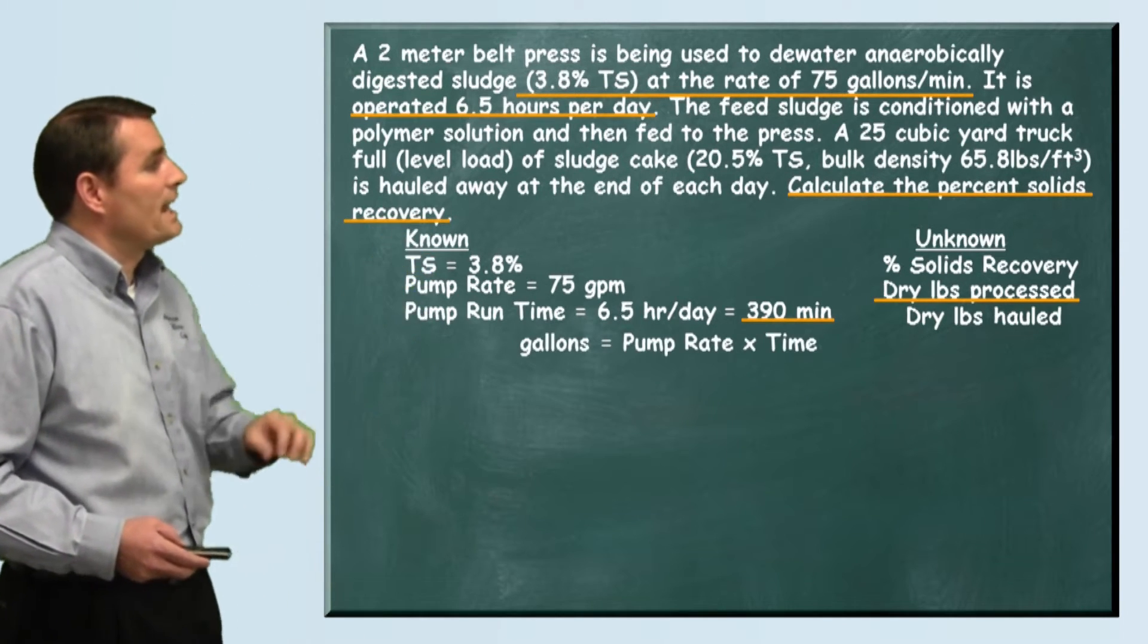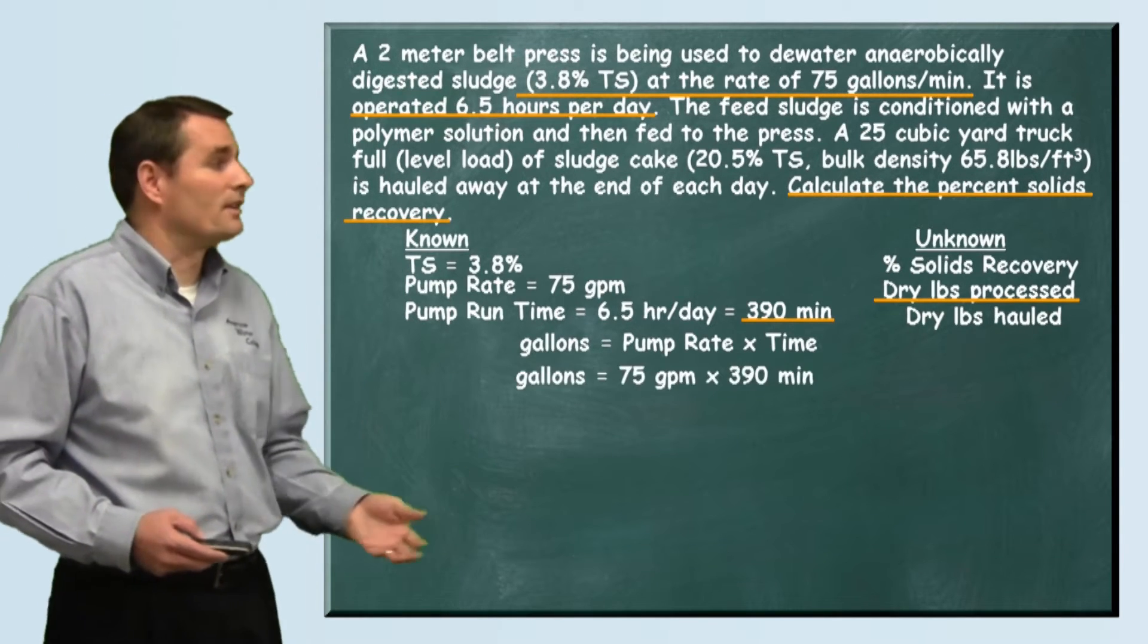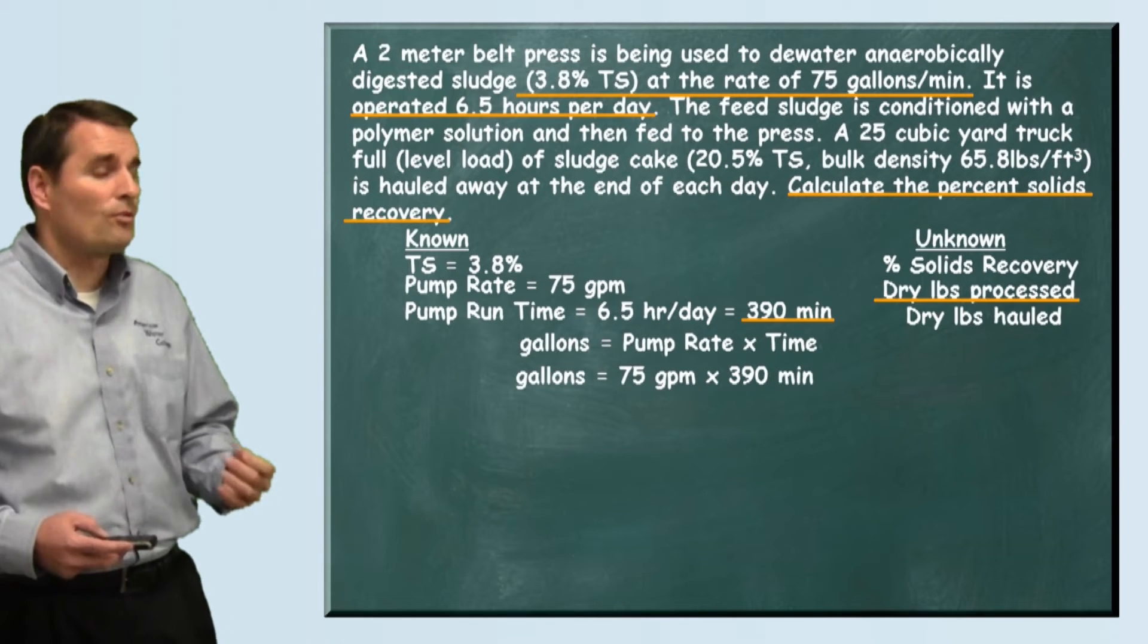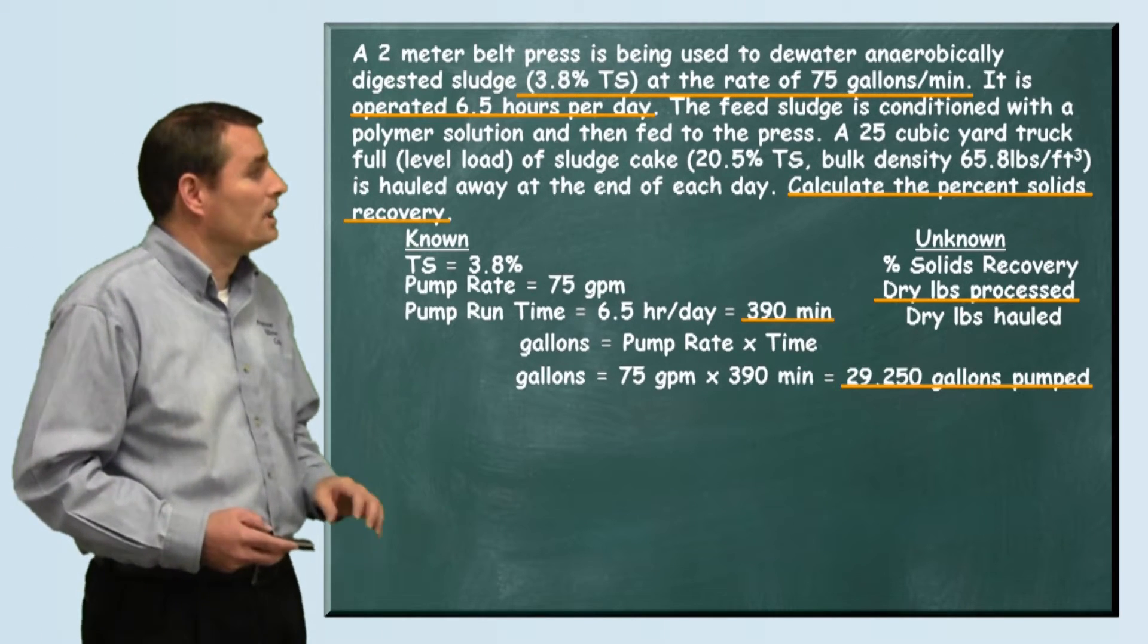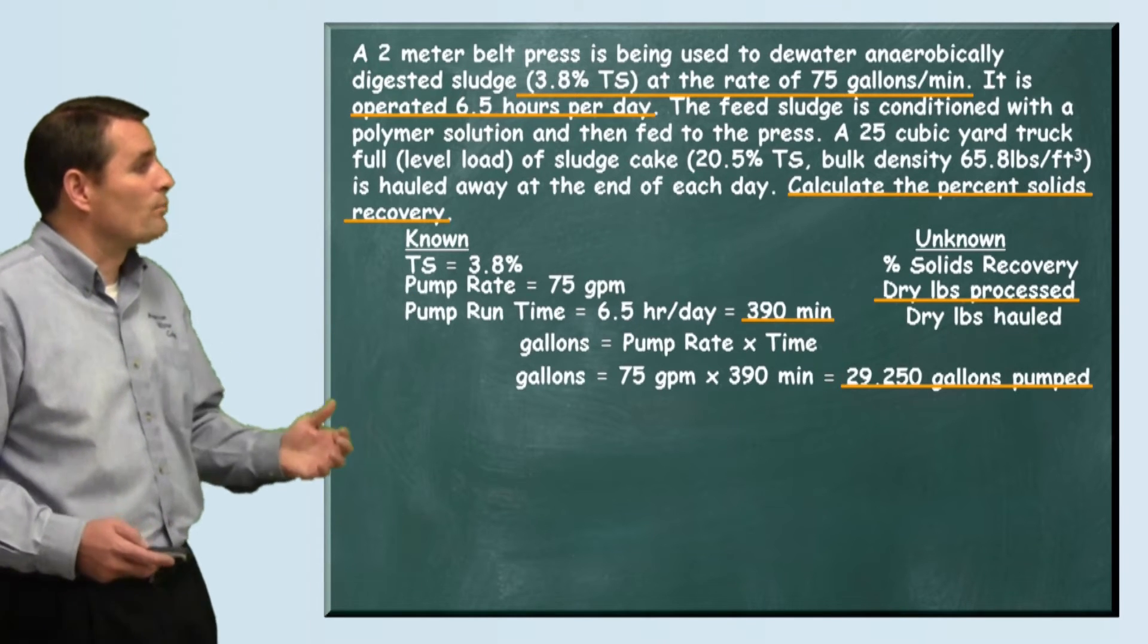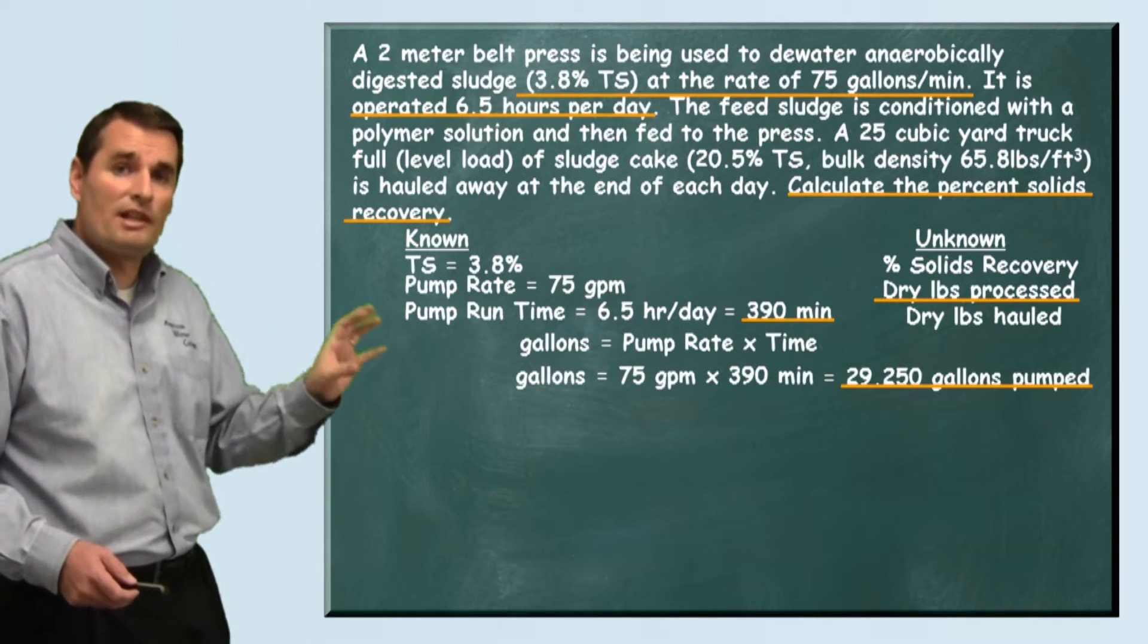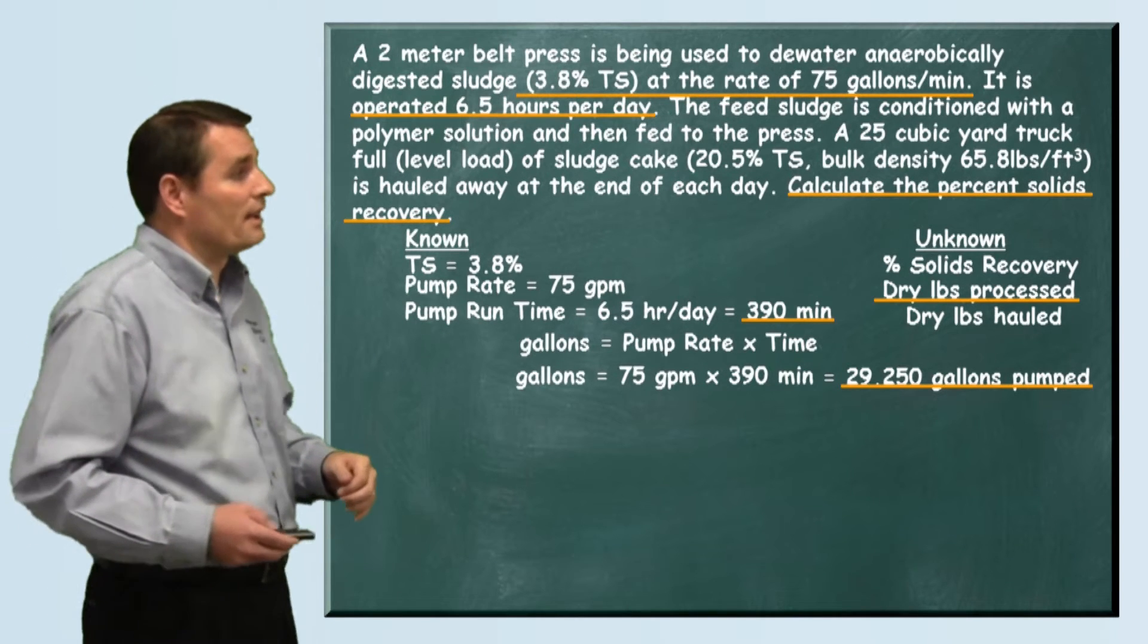To find our total gallons of sludge pumped, we're going to multiply our pumping rate times the time. We plug in our 75 gallons per minute and multiply it by the 390 minutes per day that that pump runs. We see that during this day we process 29,250 gallons. That's how much sludge goes to the belt press to be processed.